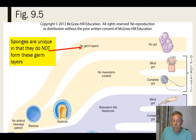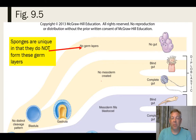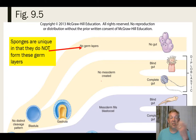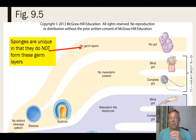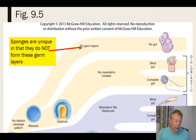We start by noticing that some animals don't form those three germ layers. Some animals don't undergo gastrulation — they don't produce ectoderm, endoderm, or mesoderm. Specifically, it's the sponges. The sponges don't undergo gastrulation and don't produce those germ layers, and so that gives us a clue that sponges are very different than other animals.